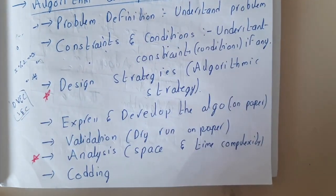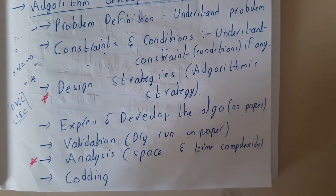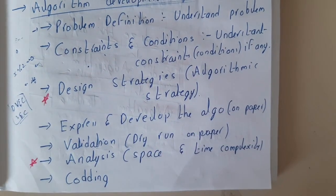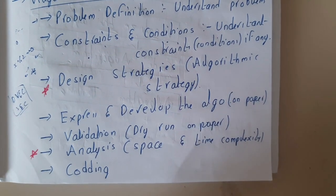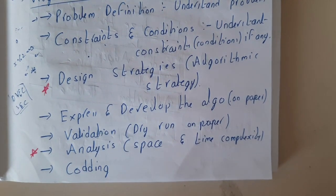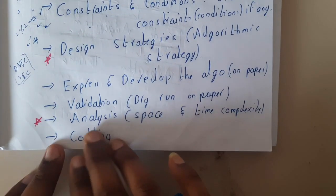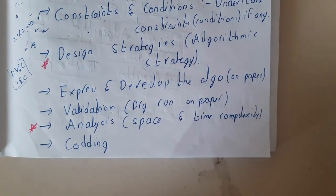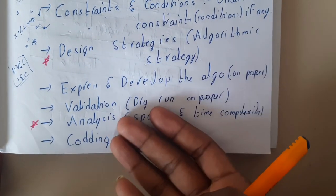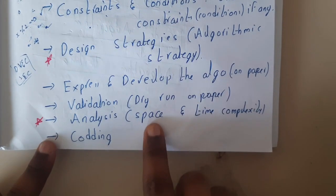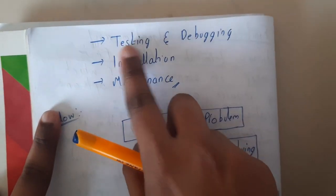Next, express and develop the algorithm on paper before coding. If you are designing a large application, you first develop the outline on paper. After that comes validation — dry-running it on paper without involving a computer: give input 2, it goes here, checks true, prints even, and so on. Then comes analysis, where you check space and time complexity — there are multiple variations like cost, space, time, and main memory space, but we primarily consider space and time. After that you move on to coding, and once coding is done, to testing and debugging.